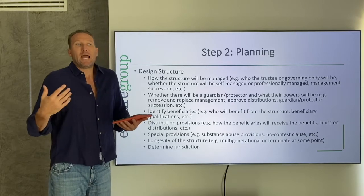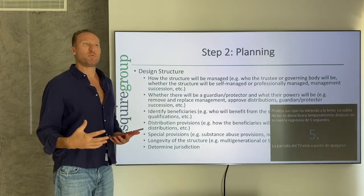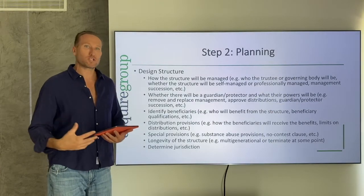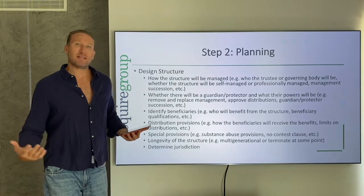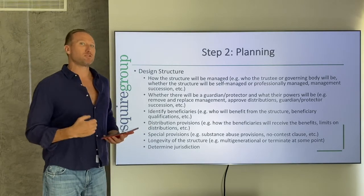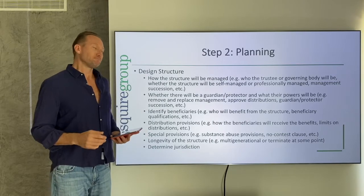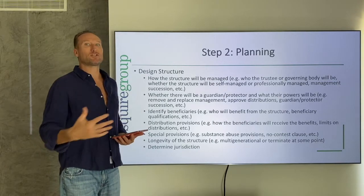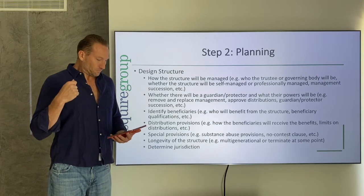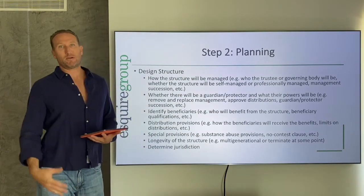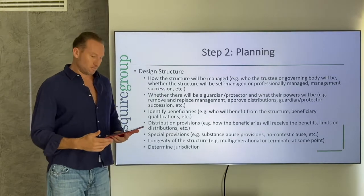We identify the beneficiaries and when a beneficiary can benefit. Is it going to be completely discretionary? Do they have to have obtained a certain age, a certain education requirement, or work experience? There are also distribution provisions to consider — are there going to be any limits on distributions? A lot of people put in substance abuse provisions, so if somebody is a gambling addict or a drug addict, they can't get distributions other than for treatment. Or a no-contest clause, so if somebody challenges the trust or foundation, they're automatically out. We also determine the longevity of the structure: is this only going to last for the lifetime of the settlor, or is this going to be multi-generational?